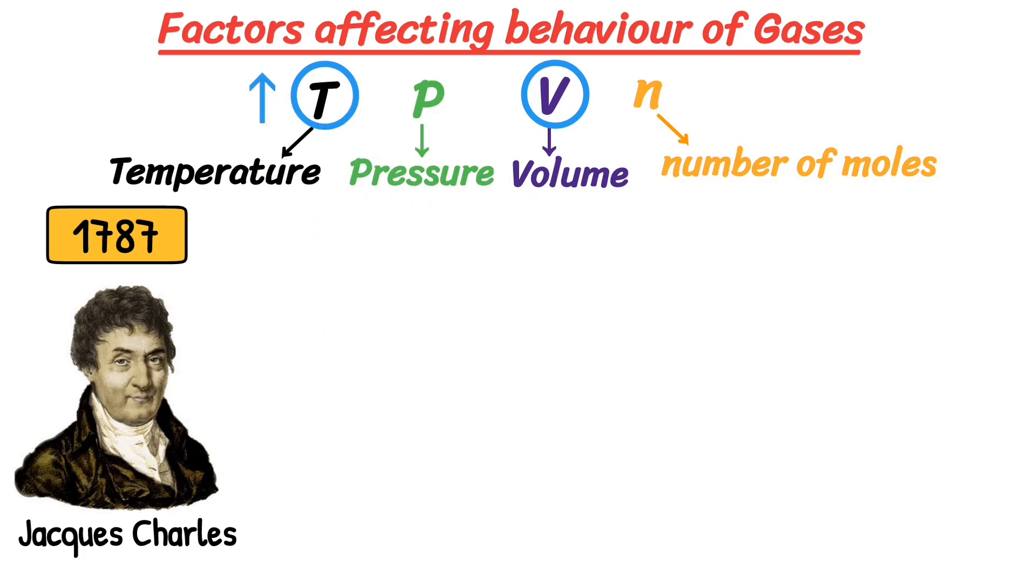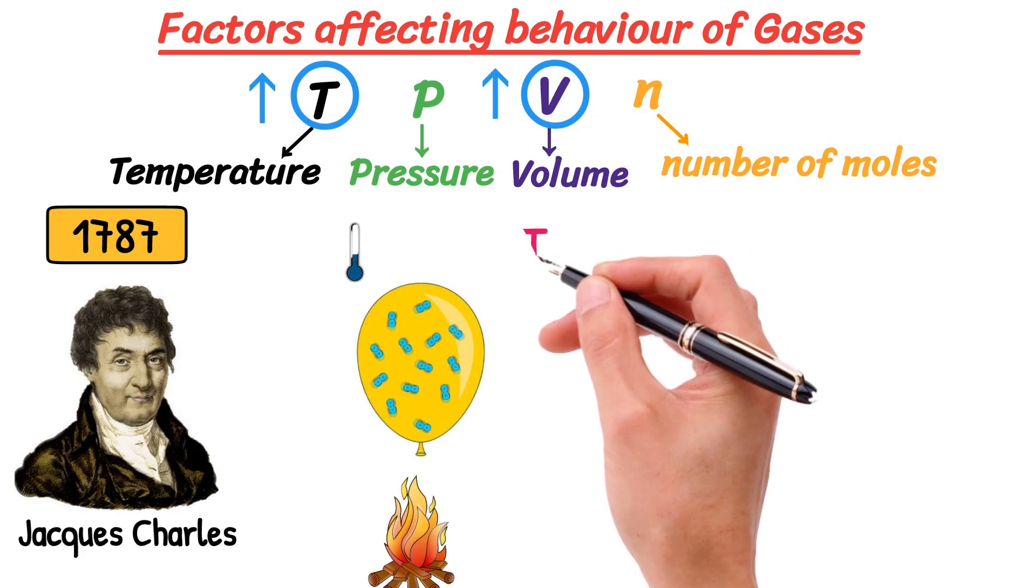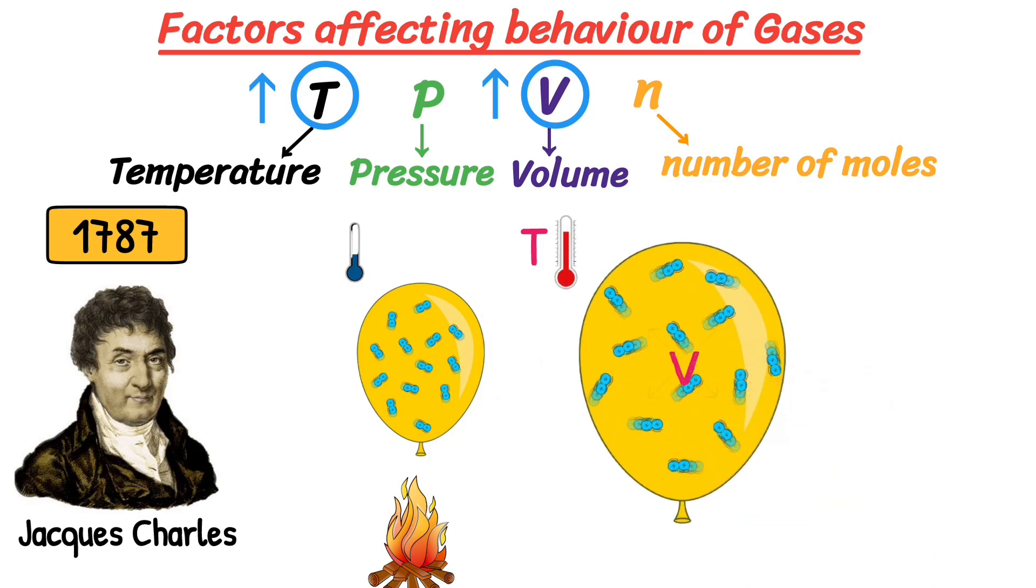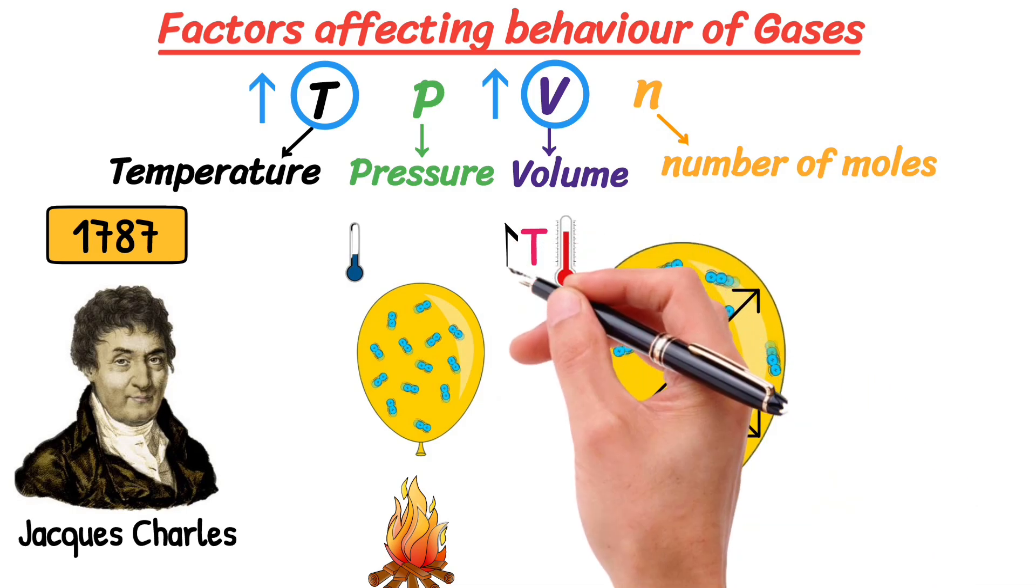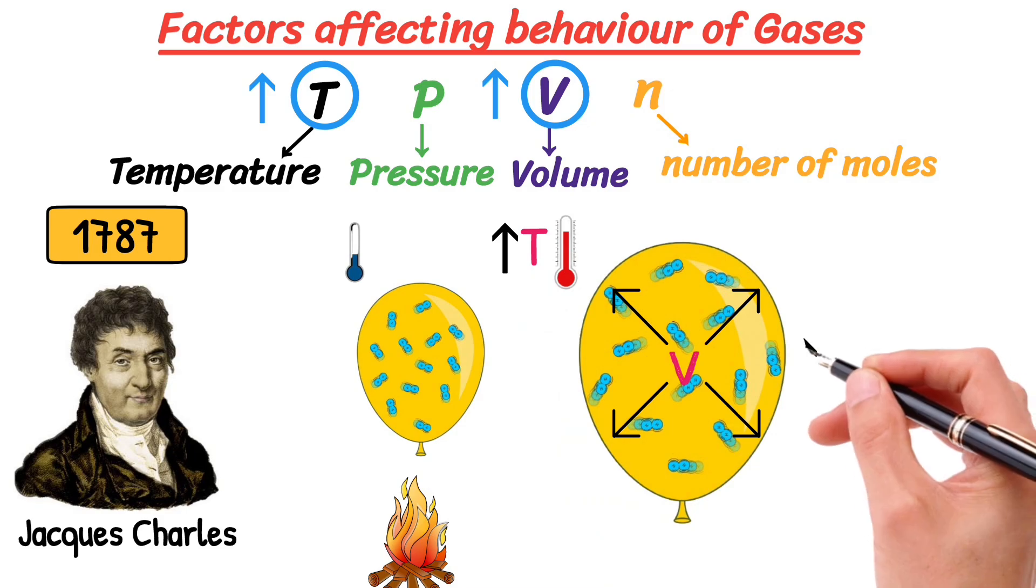Charles says that if the temperature of a gas increases, its volume also increases. For example, you've got a balloon. When you heat it up, the air inside expands, making the balloon bigger. So by increasing the temperature, the volume of gas inside the balloon will increase, and your balloon expands.